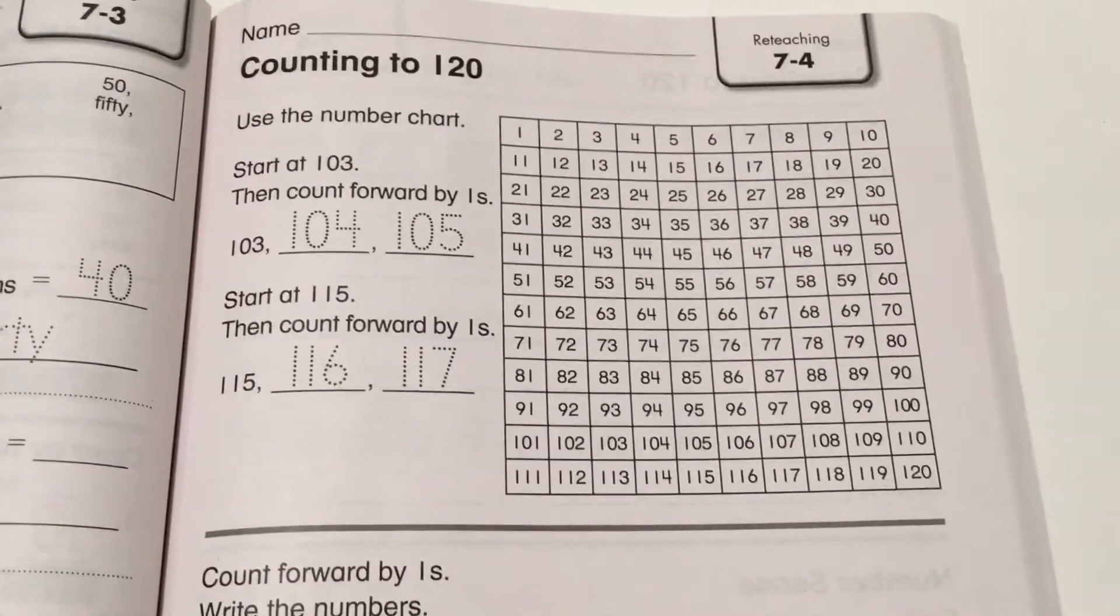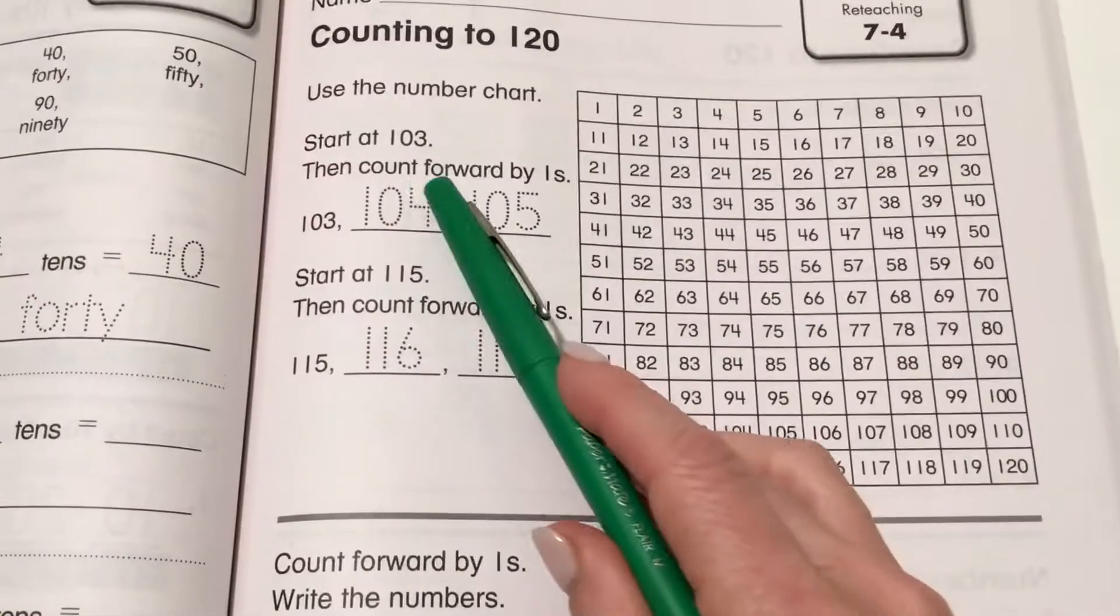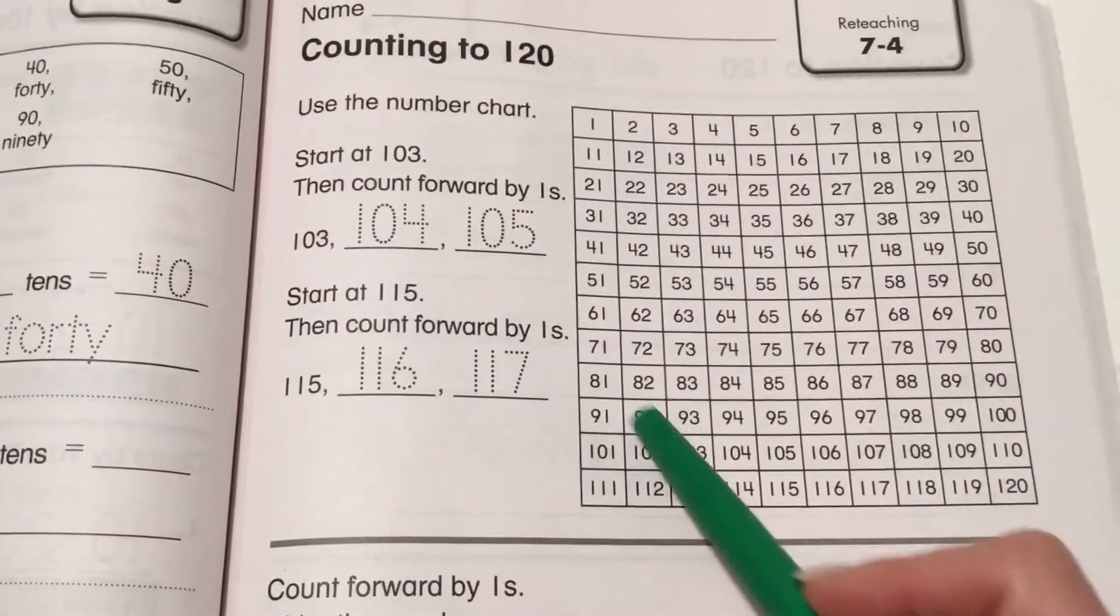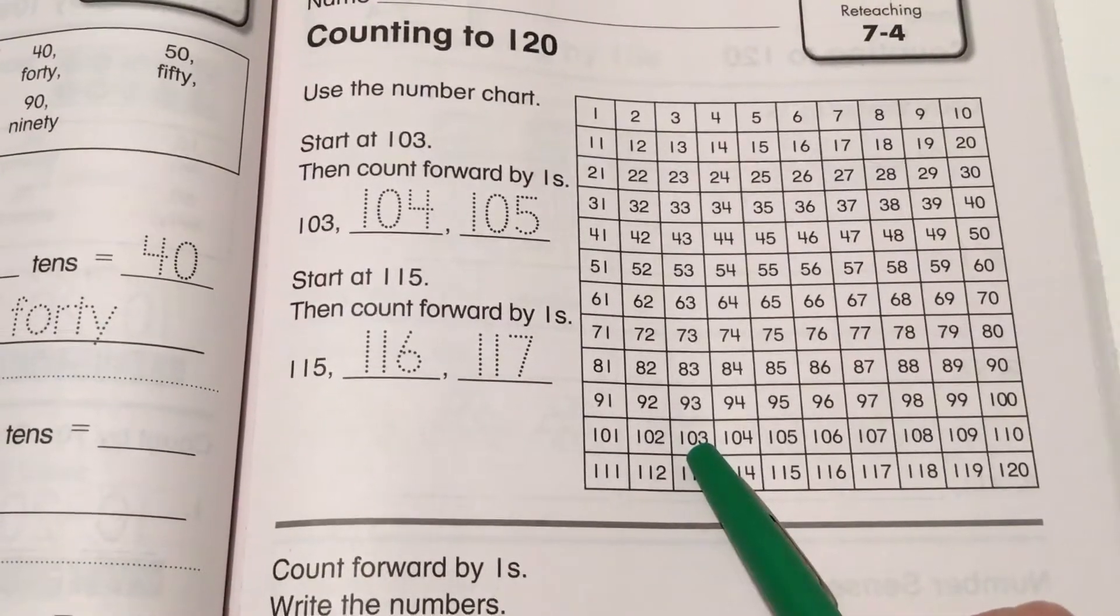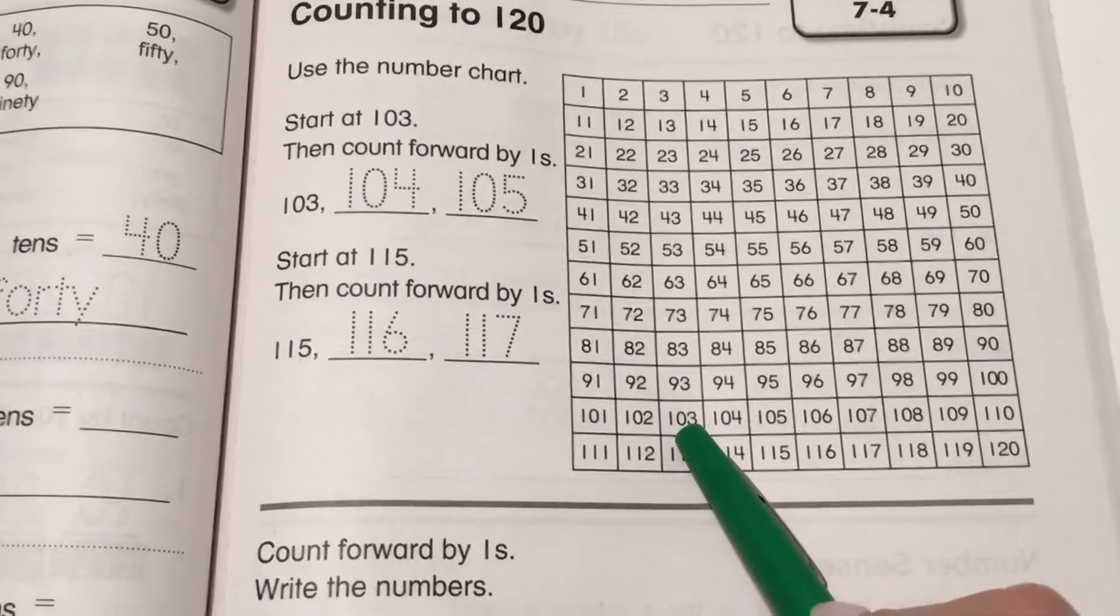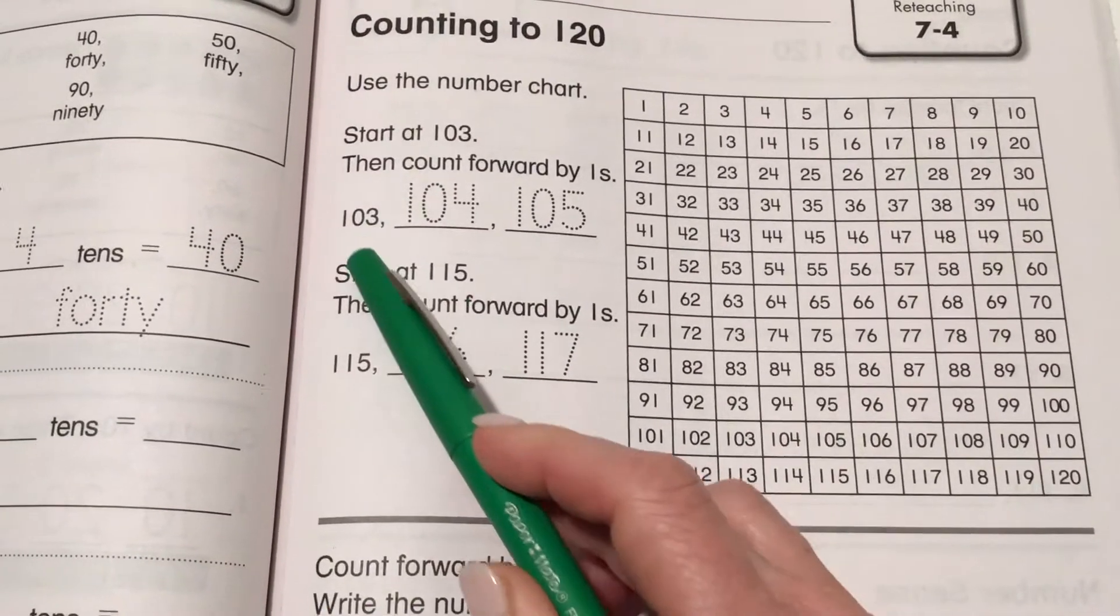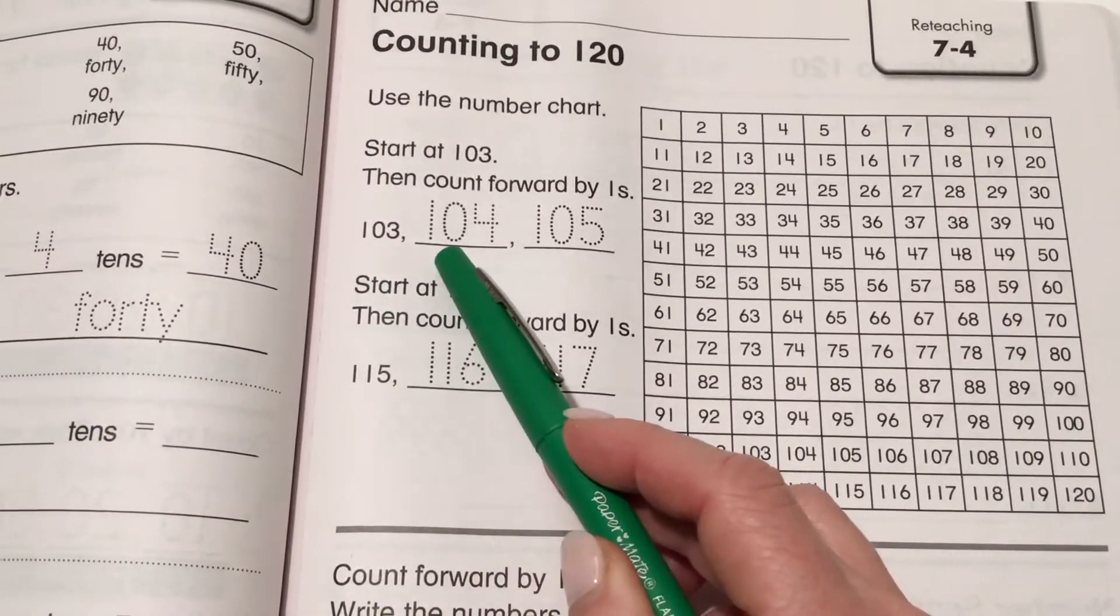So you should be pretty good at this. It's telling you to start at number 103 and then count forward by ones. So we locate 103 and count forward: 104, 105. So you see here, 103, 104, 105.